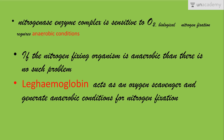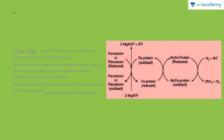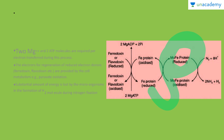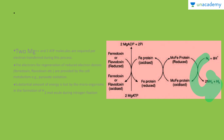Due to the presence of leghemoglobin, the roots of plants appear somewhat pinkish in color. Regarding the electron transfer process: the reducing agent, ferredoxin or flavodoxin, gets reduced and electrons are transferred to the iron protein; from the iron protein they go to the iron-molybdenum protein; and when the iron-molybdenum protein gets reduced, electrons go to nitrogen. Nitrogen combines with eight hydrogen ions and eight electrons and gets reduced into ammonia and a hydrogen molecule.